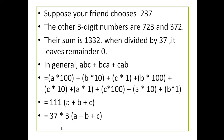Suppose your friend chooses 237. Cyclically permuting: move the rightmost digit to the left to get 723, then again to get 372. Adding all three: 237 plus 723 plus 372 equals 1332. When 1332 is divided by 37, the remainder is 0.